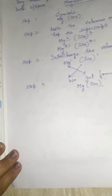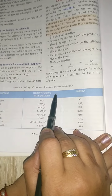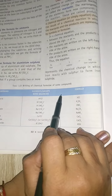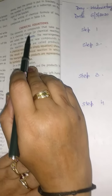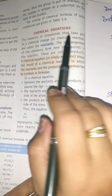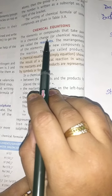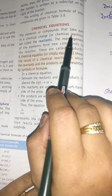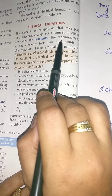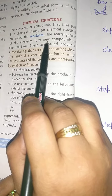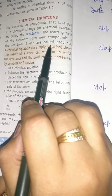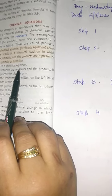In table 3.9 it is showing the chemical formula of some compounds and you have to practice it. Now, what is a chemical equation? The elements or compounds that take part in a chemical change or a reaction are called the reactants. And the elements which form new compounds are called the products.